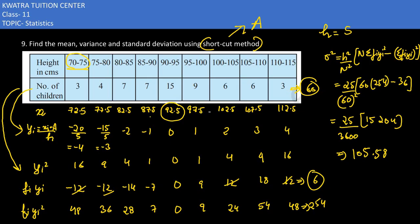Okay, so this is my variance, σ². If you have to find standard deviation, then what is the value? It is the square root of 105.58. So that's how you need to do the ninth part.